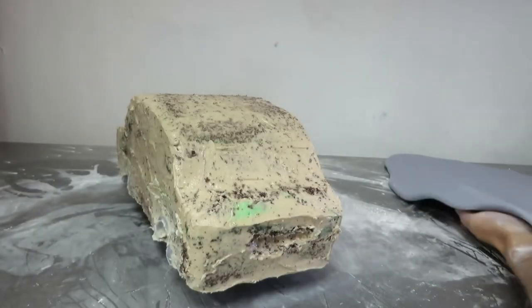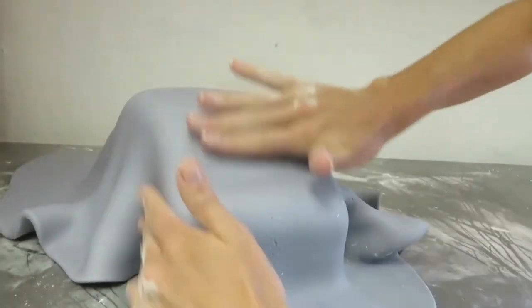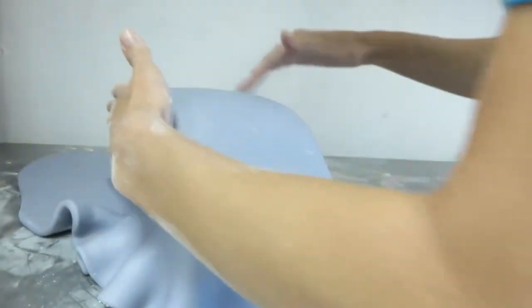I've rolled out my fondant and it's ready to go. Place the fondant gently over the cake and one section at a time, lift the fondant and smooth it against the side of the cake.